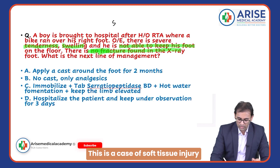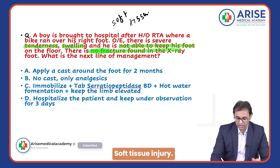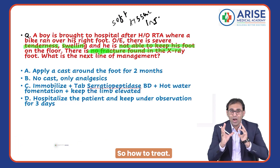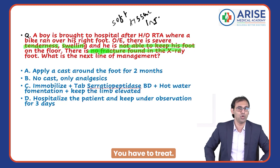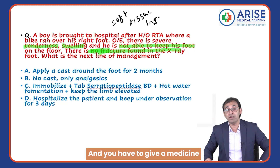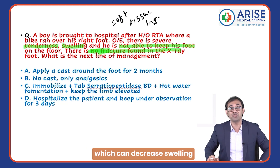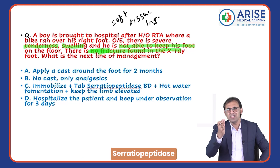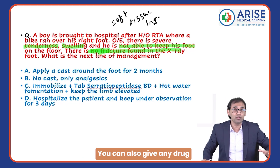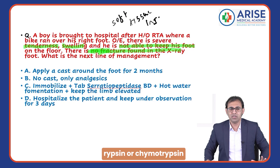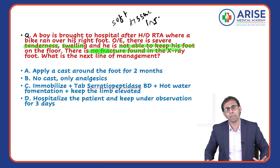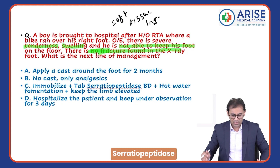How to treat soft tissue injury? First of all, immobilization is mandatory, same as for a bone fracture. You have to give a medicine which can decrease swelling and inflammation — serratiopeptidase. You can also give any drug having a combination of trypsin or chymotrypsin with serratiopeptidase.